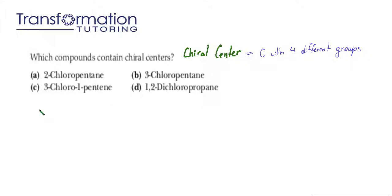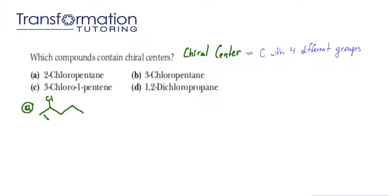Let's start with A. In A, I have 2-chloropentane. Pentane means I have five carbons — one, two, three, four, five — and on the second carbon, I have a chlorine. Let's draw it. Now we have to see: is there a carbon in this molecule that is attached to four different groups? It might be easier by putting hydrogens in here.